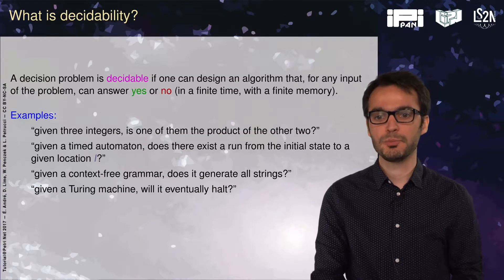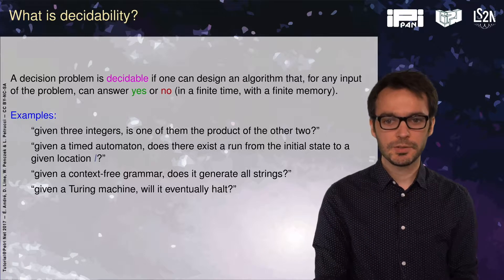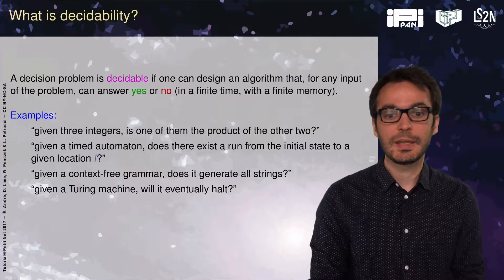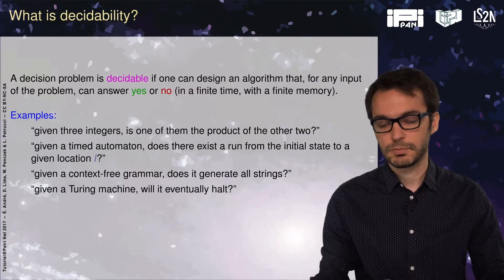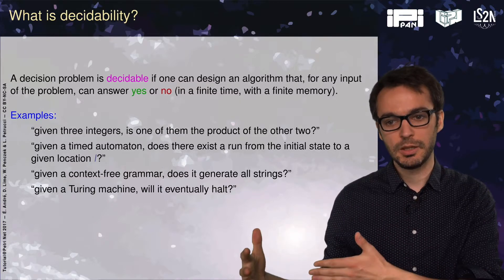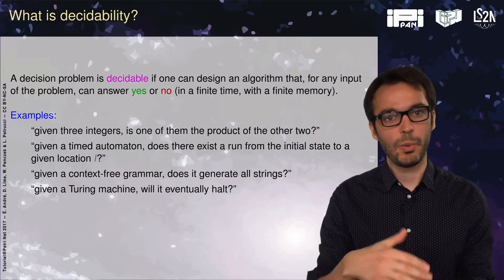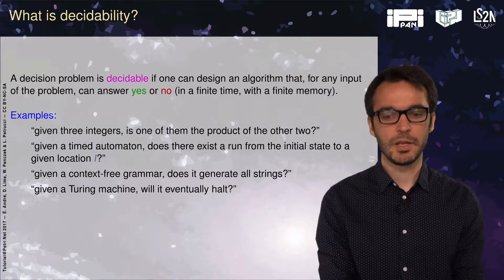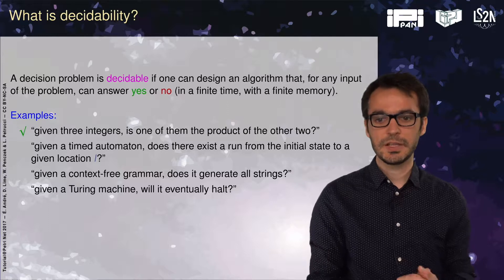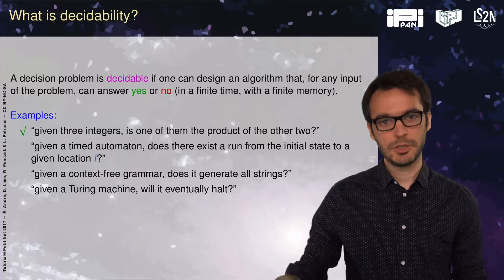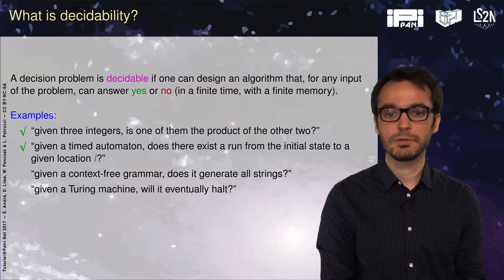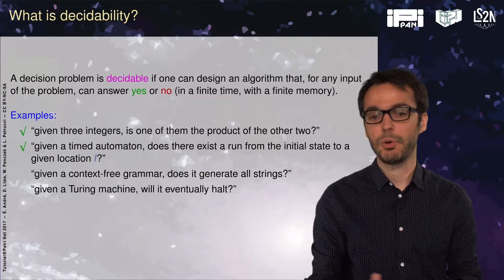Some examples of well-known problems: given three integers, is one of them the product of the other two? This one is strictly decidable — we can do different combinations: take the first integer, multiply it by the second one and check if it's the third one. Given a timed automaton, does there exist a run from the initial state to a given location 'error'? This one is decidable thanks to a nice abstraction called the region automaton or zone automaton.